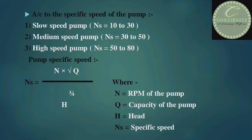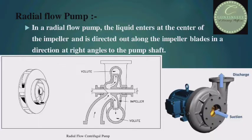Now, the radial flow pump. In a radial flow pump, liquid enters at the center of the impeller and is directed out along the impeller blades in a direction at right angles to the pump shaft. In the diagram, you can see that liquid enters through the suction side and is released through the discharge side at an angle of 90 degrees — that is, radially. That is why it is called a radial flow pump.